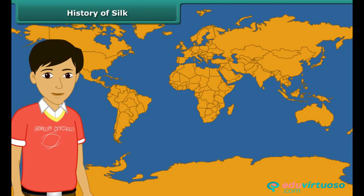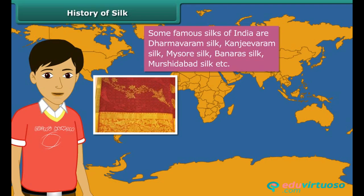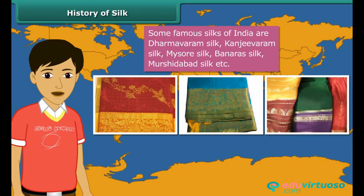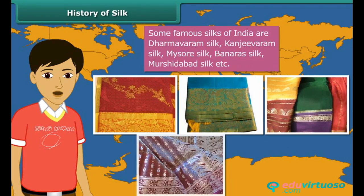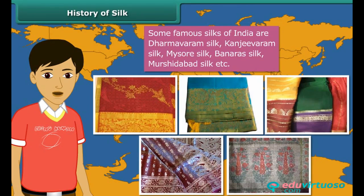Some famous silks of India are Dharmavaram silk, Kanjivaram silk, Mysore silk, Banana silk, Murshidabad silk, and others.